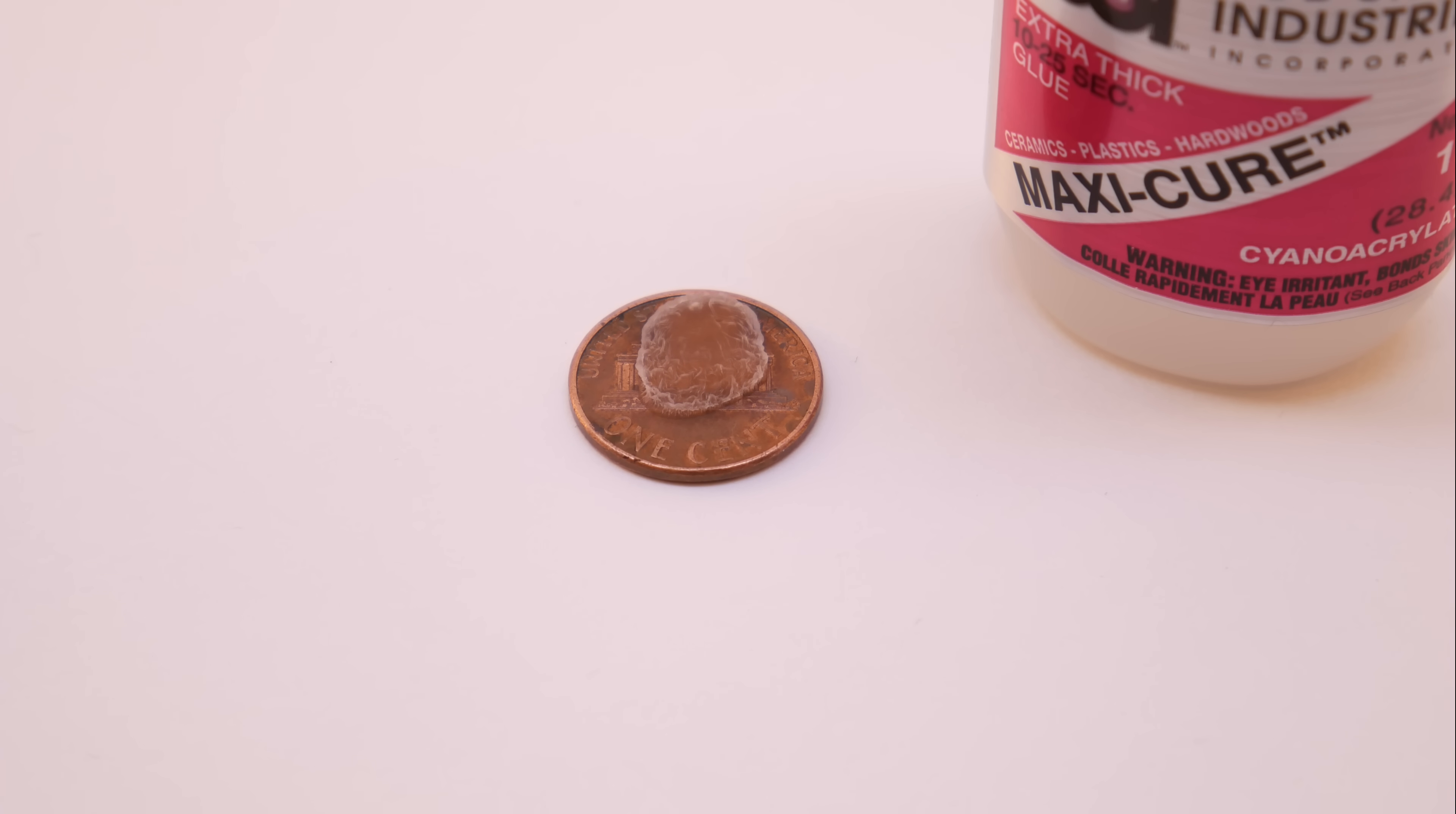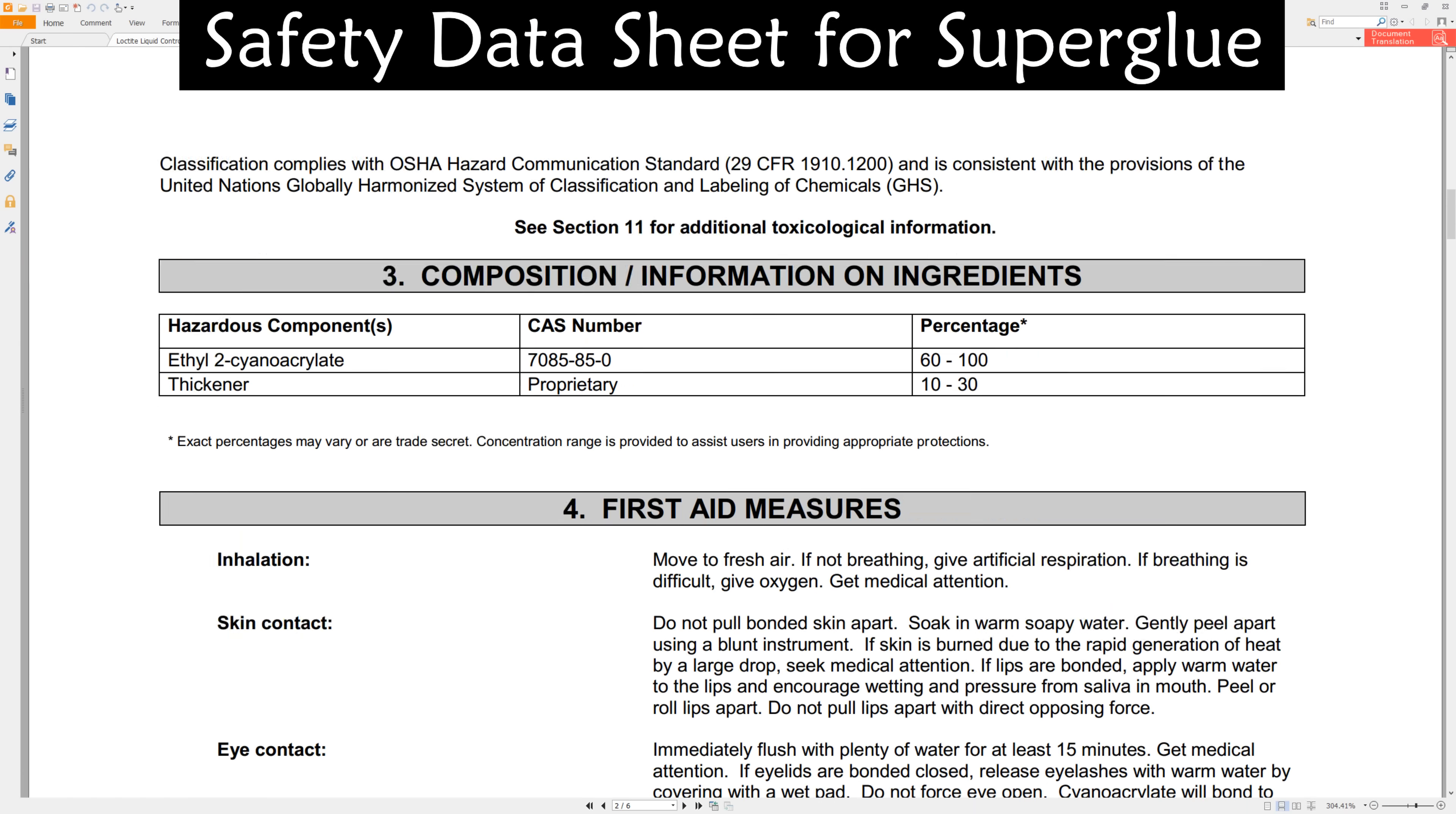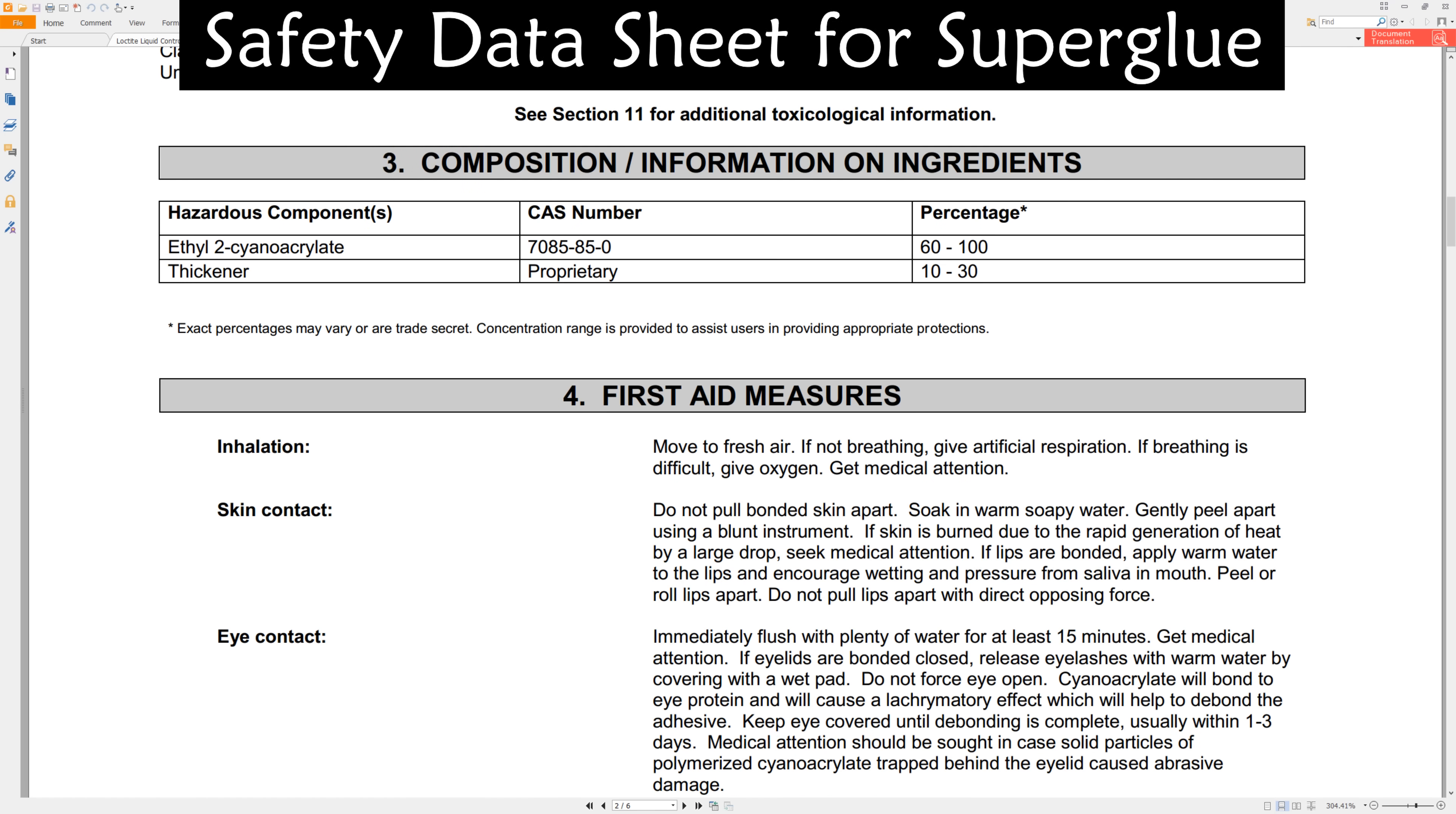So, what is superglue? Many of us have heard it called CA or cyanoacrylate before. If we check out material safety data sheets for our favorite brands, we can see that the primary ingredient in all of them is a chemical called ethyl cyanoacrylate.